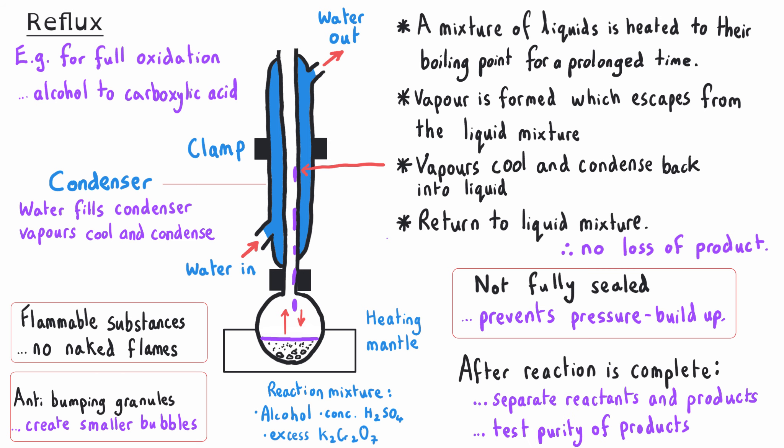Once we've finished our reflux reaction, it will be necessary to separate the reactants from the products, and we would probably use distillation to do this. Then we will probably want to test the purity of our products — first and foremost through testing the melting point or boiling point. We might also carry out chemical testing, proving either the presence of a functional group such as the carboxylic acid, or testing for the absence of a functional group like the alcohol or aldehyde.